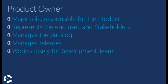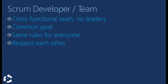The Product Owner is responsible for the product and represents the parties interested in the success of the project. He also manages the product backlog, which we'll see in a few moments. The Product Owner also manages releases and works very closely with the development team. The Scrum team is cross-functional with no specific roles but with a common goal of delivering the best product. Everyone follows the same rules and everyone respects each other.